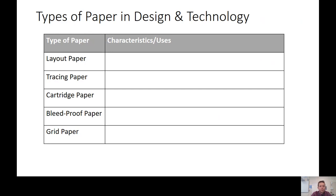We need to know the name of each paper type, the characteristics and properties — what it's like — and then the different uses. What's that type of paper used for? Teachers, could you pause the video? Students, I'd like you to draw this table neatly. We're going to complete the table as we work through the video and PowerPoint. In about two minutes, once you've drawn your table, we'll go through the five types of paper we need to know about.